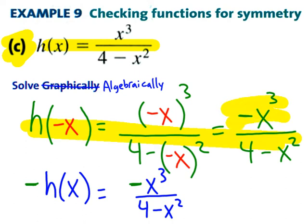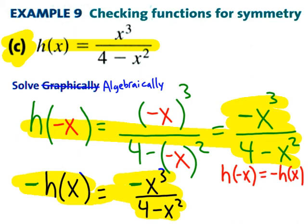And now look at how h of negative x, in particular, this last part over here, notice how that compares with negative h of x. Now they are the same thing. And since h of negative x does equal negative h of x, that is our definition for an odd function, and we will call it odd.